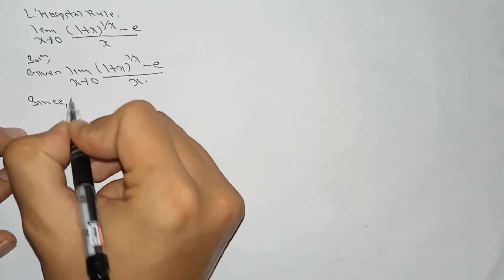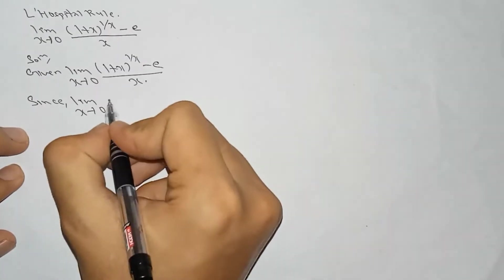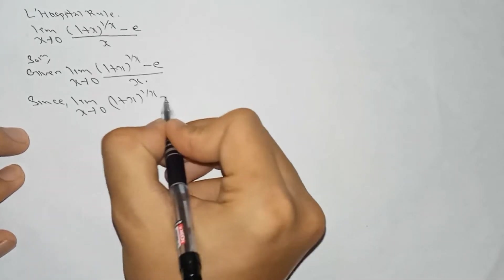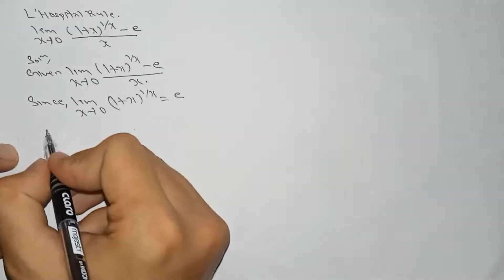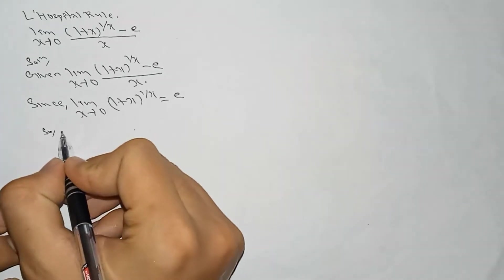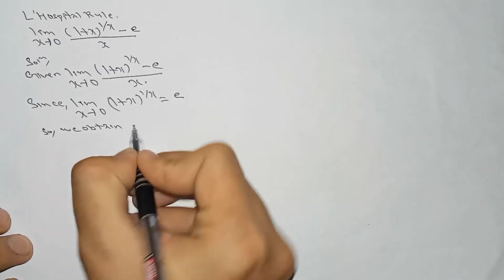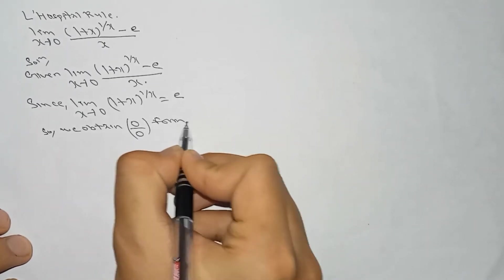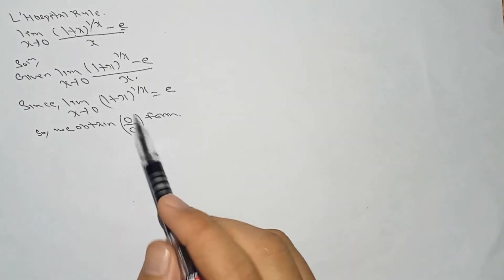Since limit x tends to 0 of (1 plus x) to the power 1 by x is equal to e, if we substitute x tends to 0 we obtain the 0 by 0 form.